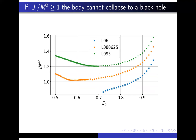Looking at the quantity |J|/m², I discussed this in my previous lecture: if this ratio is above one, the body cannot collapse to a black hole if you believe in cosmic censorship, because the Kerr solution requires J ≤ m². Plotting J/m² for those three families, you see that the blue one gets below one — so somewhere there, it is allowed for the body to collapse to a black hole if you were to start the evolution.